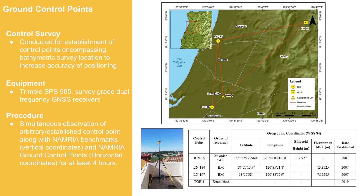To make sure that positioning is accurate, control points are strategically established at locations accessible near the survey area. In establishing control points, simultaneous observation of the MARIA control points, benchmarks, and base control point was done for at least four hours to determine the horizontal and vertical position of these control points. Shown here is the distribution of the control points established for the project.